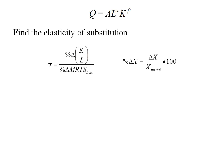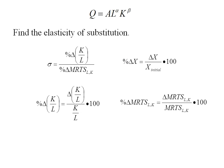The percent change in anything is its change over its initial value times 100. So the percent change in the capital-labor ratio is delta K/L over K/L times 100. And the percent change in the marginal rate of technical substitution is delta MRTS over the initial MRTS times 100.